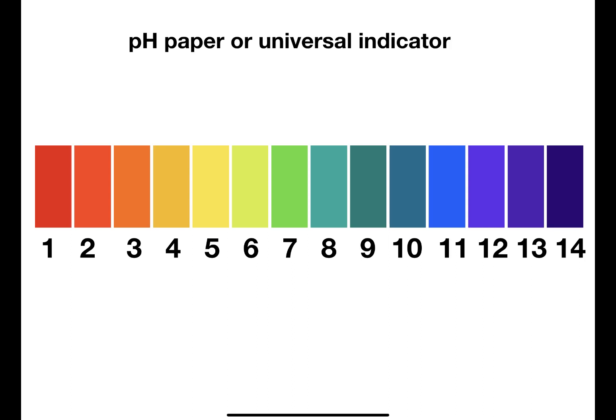To use pH paper you simply dip the piece of paper into the solution and watch for the colour change and compare to the chart.